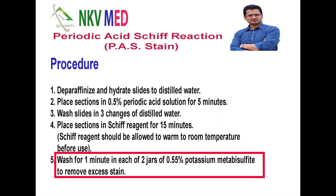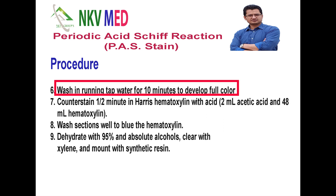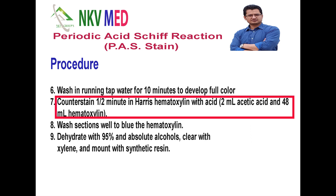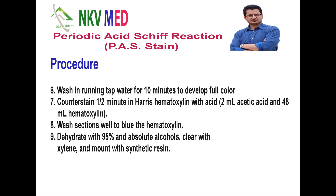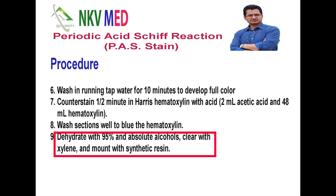Wash the slide for one minute in each of two jars of 0.5% potassium metabisulfite — to remove excess Schiff reagent. Then wash the slide for at least 10 minutes to develop the color. Next, counterstain for half a minute in Harris hematoxylin with acid to stain the nuclei, then wash well to develop the hematoxylin color. Finally, dehydrate with 95% then absolute alcohol, clear with xylene, and mount the slide with DPX or other synthetic resin. The PAS stain slide is ready to observe.